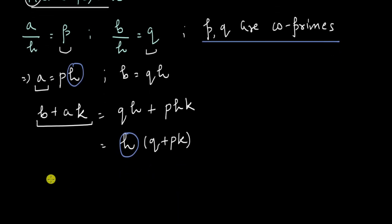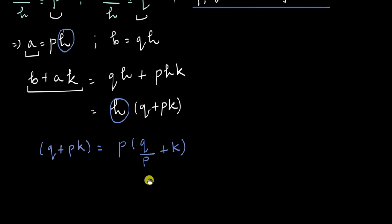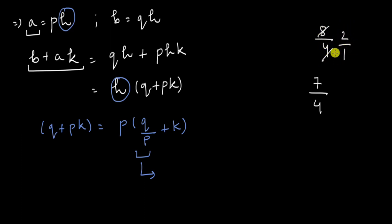So can we prove that P and Q plus PK are co-primes? From Q plus PK, we need to prove there is no factor in common between Q plus PK and P other than 1. If I take P common from Q plus PK, I get Q over P plus K. Now, since Q and P are co-primes, Q over P is not an integer — there is no cancellation that will happen. For example, 7 over 4 cannot be simplified further. But if they were not co-primes, like 8 over 4, it could simplify to an integer. Because P and Q are co-primes, Q over P will not simplify into an integer.